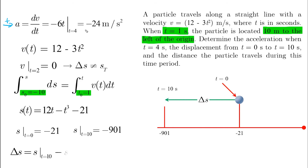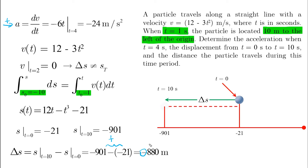The displacement is the difference between S at T equals 10 minus S at T equals 0. Pay attention to the double negative signs here, which become positive. Note that the negative sign of the displacement means that it happened to the left.